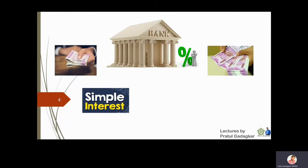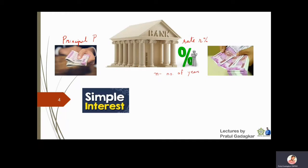When you have some amount with you — some money — that money is called the principal. This money we are going to invest in a bank at some rate, which is called r percent. The principal is capital P, and we invest it for some number of years, which is n. After some years, the extra money you get from the bank is called simple interest, given by the formula SI = P × n × r / 100.